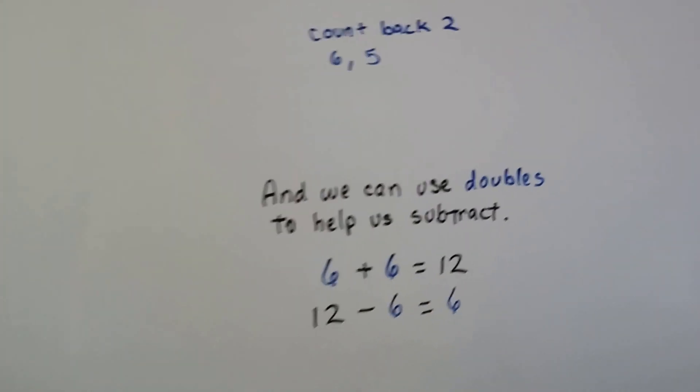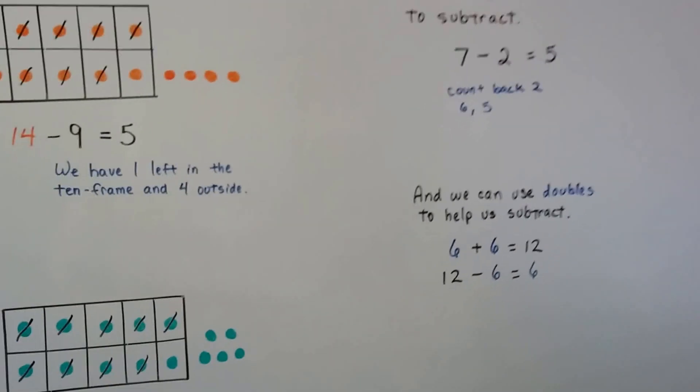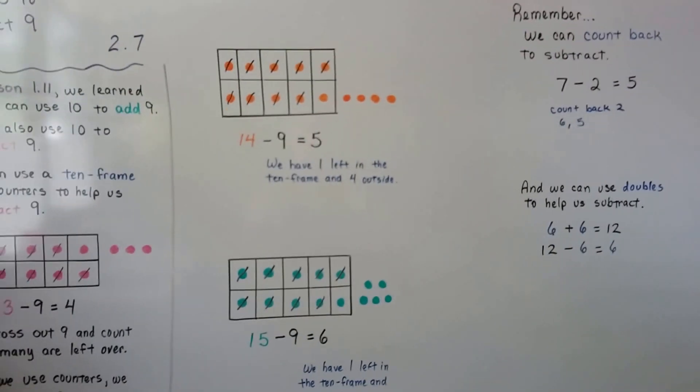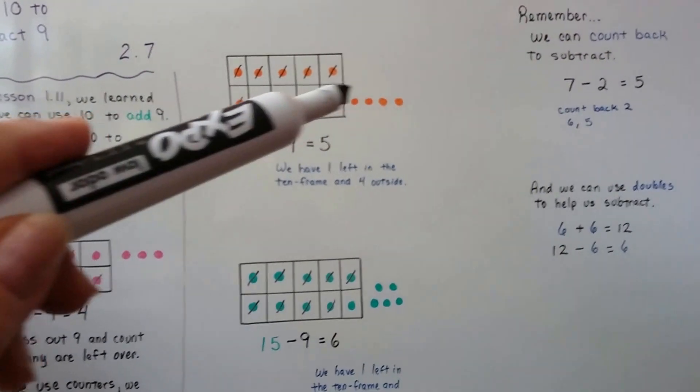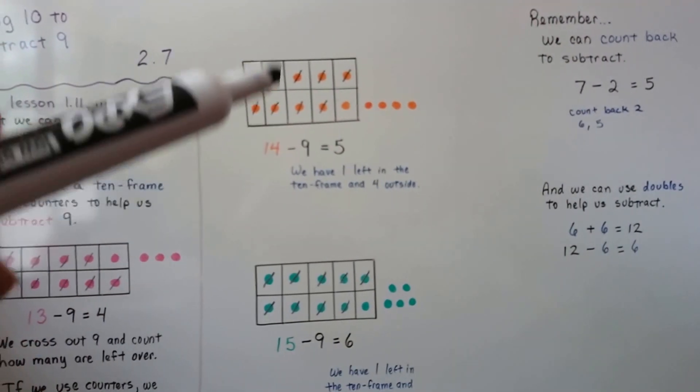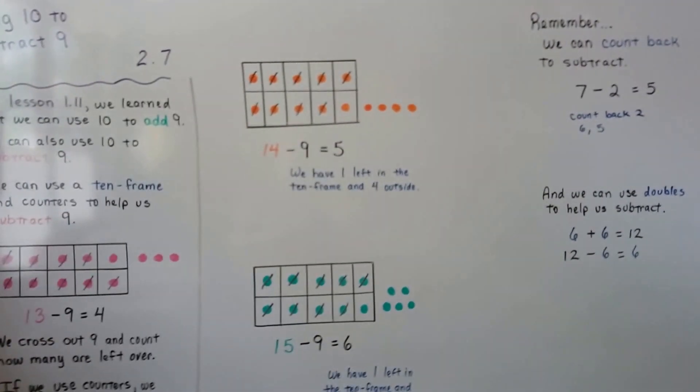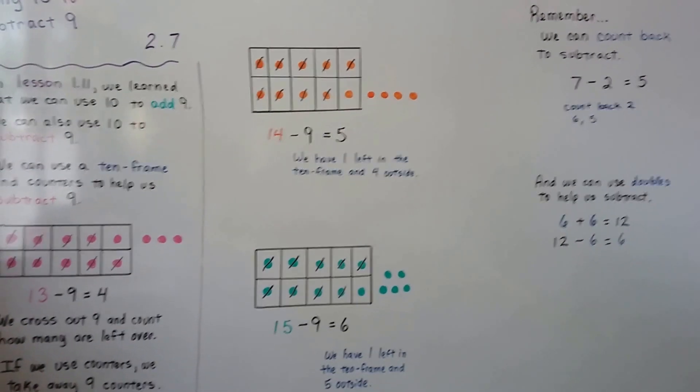So you can make yourself a 10 frame. If you haven't already, just get a piece of cardboard and you draw one line horizontally going sideways in the middle and then four lines going up and down and that'll make 10 boxes.